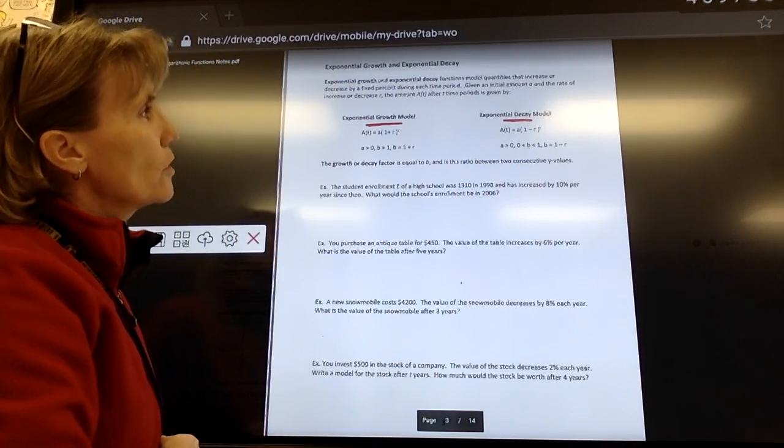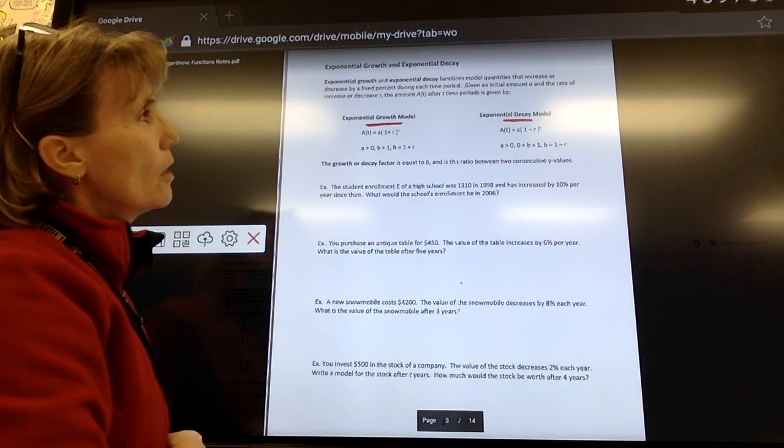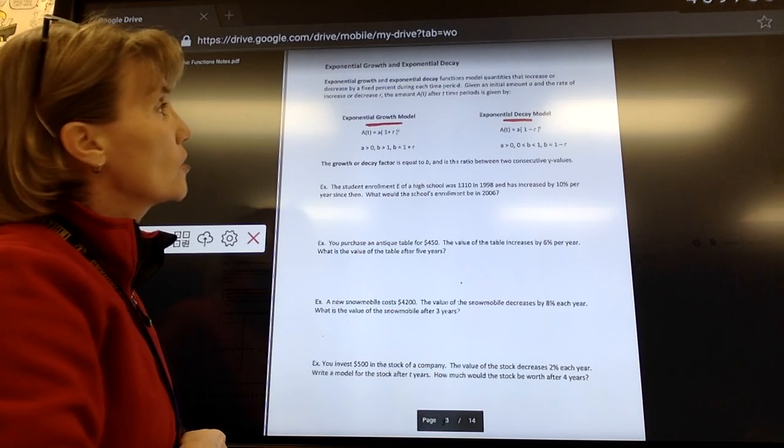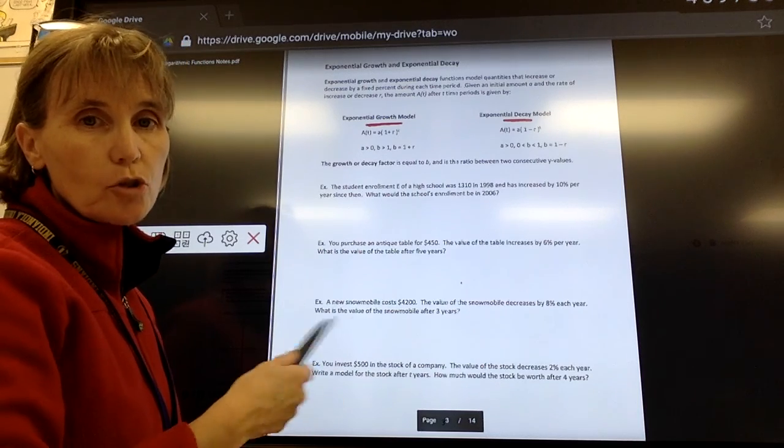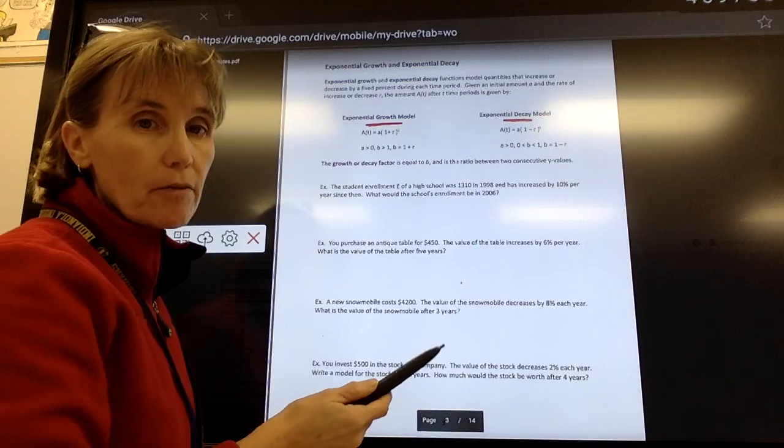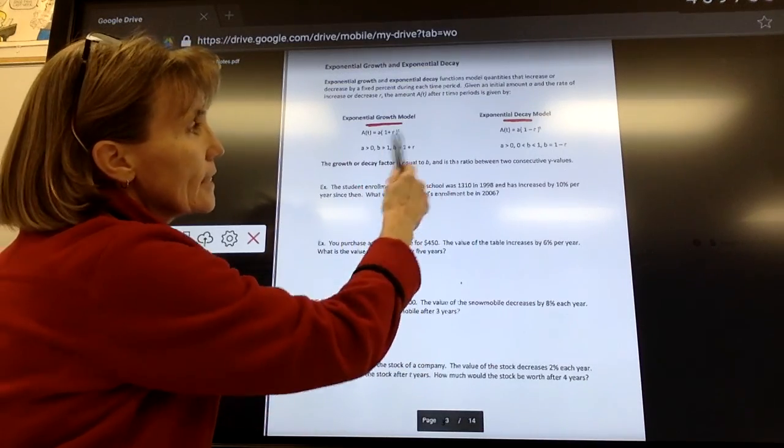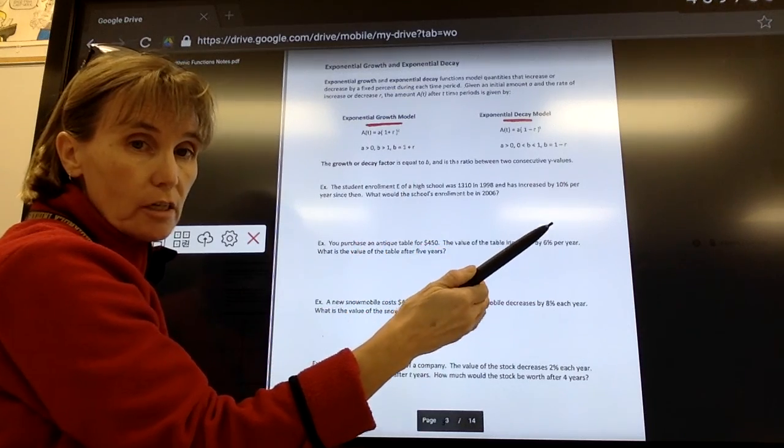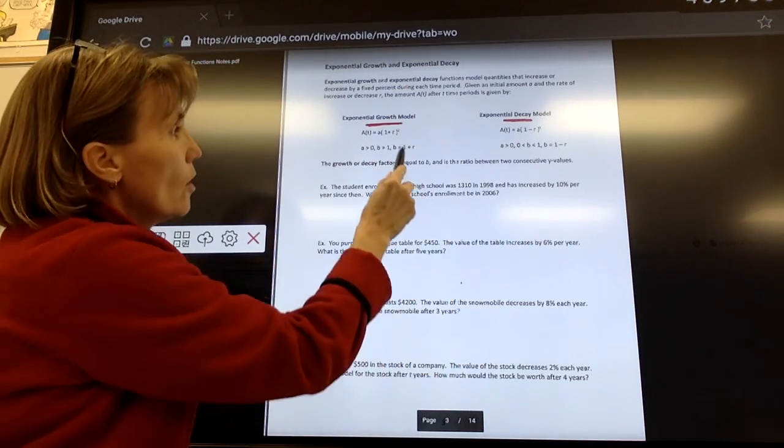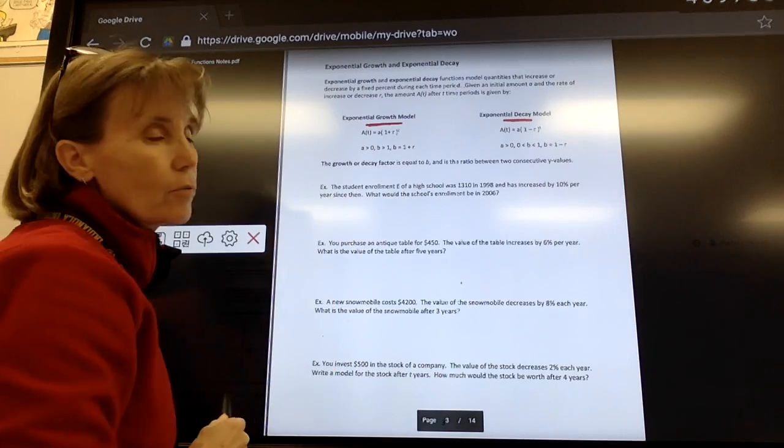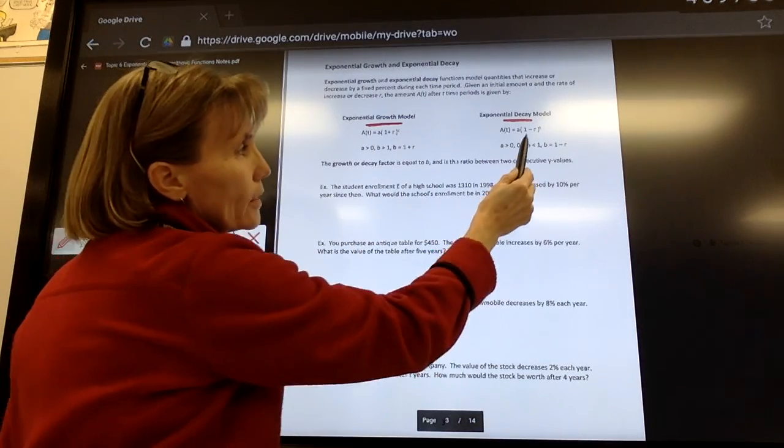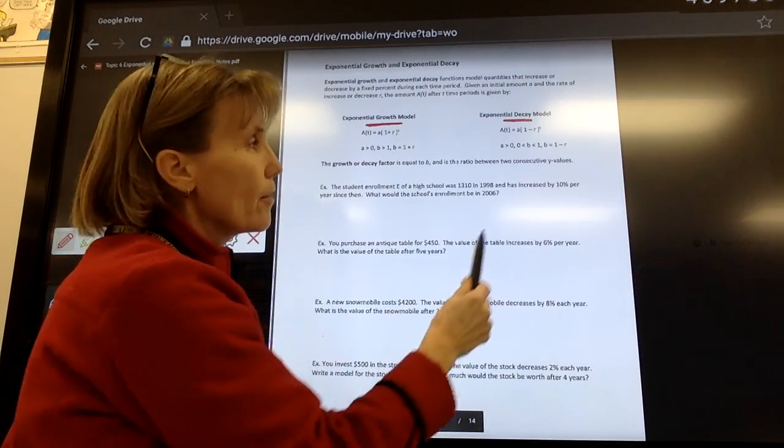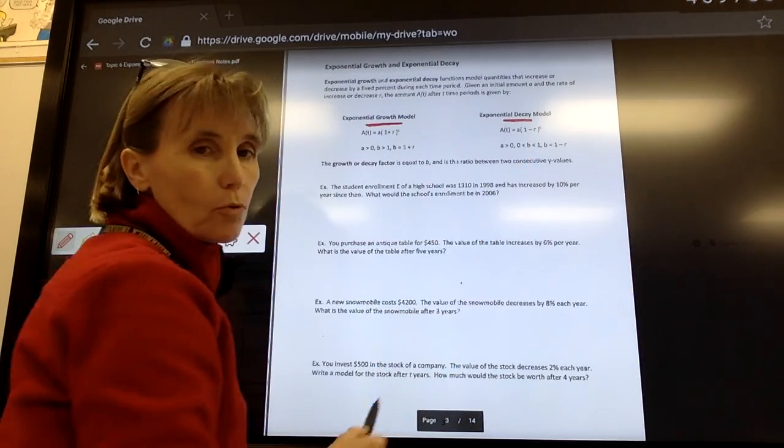We have what's called an exponential growth model and an exponential decay model. Exponential growth and decay function models quantities that increase or decrease over a fixed percent during each time period. What's really nice about this equation is they're literally exactly the same equation. The only difference is that when something is growing or increasing or appreciating in value, we have 1 plus the rate of growth. And when it's decaying or decreasing or depreciating, we have 1 minus the rate of growth.